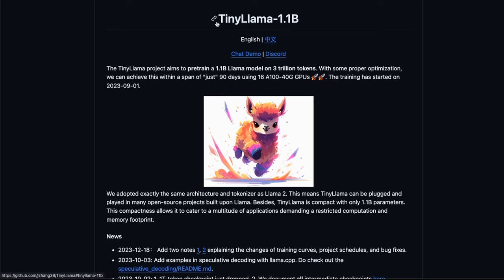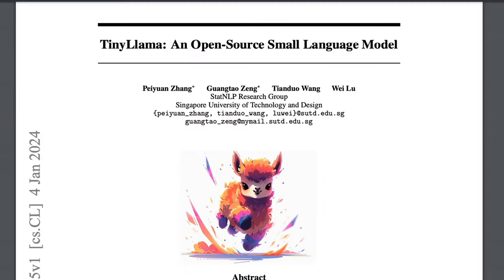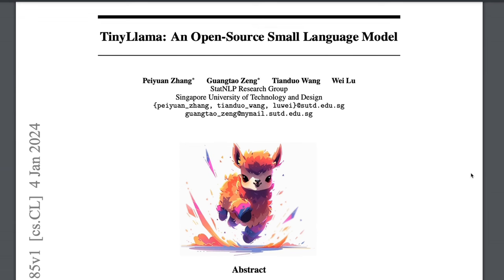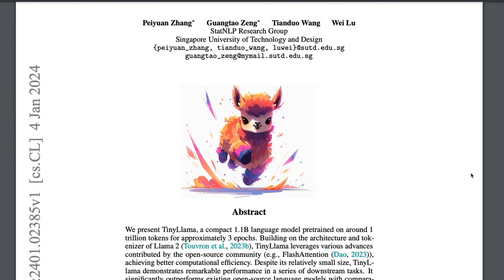In the last video, we looked at TinyLlama, which is a small language model. In this video, I'll show you how to fine-tune this model on your own dataset. If you have watched the previous video, you will know that TinyLlama is a very small model, so it's not really great for general language tasks. However, you can fine-tune this model on very specific tasks, and you can run this on edge devices.